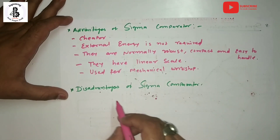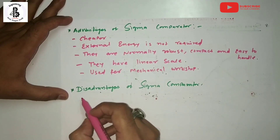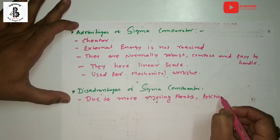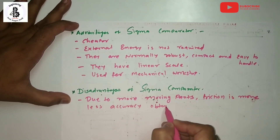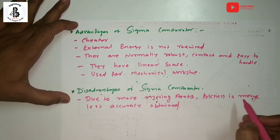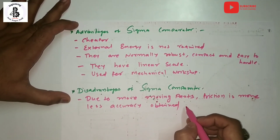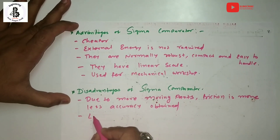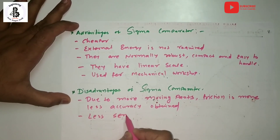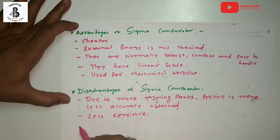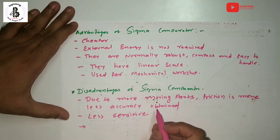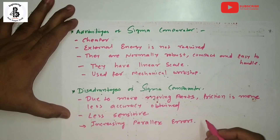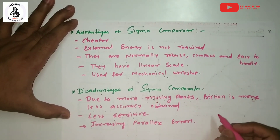Disadvantages of Sigma comparators: First, due to more moving parts, friction is more, resulting in lower accuracy. Second, they are less sensitive. Third, there is increasing parallax error.